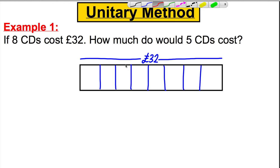Well, by trial and error you will see that it must be 4, because 4, 8, 12, 16, 20, 24, 28 and 32. So therefore we are going to first of all say that 1 CD must therefore be £4.